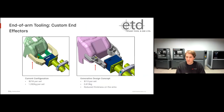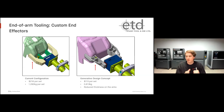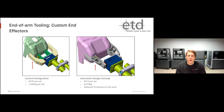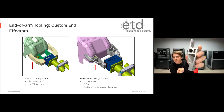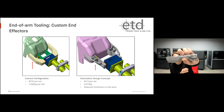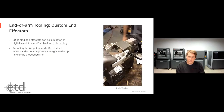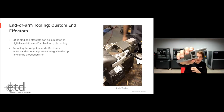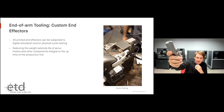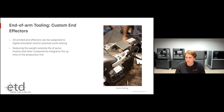A great example is this custom end effector from customer Egger Tool and Die. The original geometry on the left was very simple — costing $216 per set to produce and weighing 1.2 kilograms, designed to be low cost to machine rather than optimized for its application. On the right, the new optimized design drops the cost almost in half to just $113 per set, at 0.8 kilograms. Reduced weight removes mass from the end of arm, which increases performance and reduces wear. The reduced weight with this optimized design also extends the life of the servo motors in the automation assembly, increasing production time and reducing cycle time.